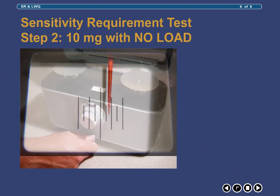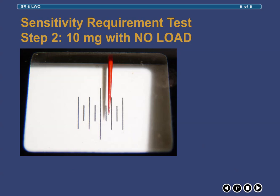Then observe the scale to see how many divisions the pointer has moved from its rest point. Using a 10 mg weight, the rest point on your pointer should move at least one and one half divisions as shown here, in order for your balance to pass this step in the sensitivity requirement test. At this point, you may be asking: why one and one half divisions?